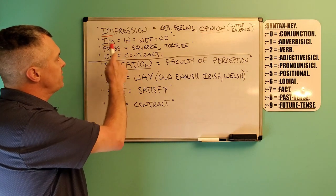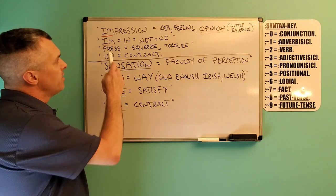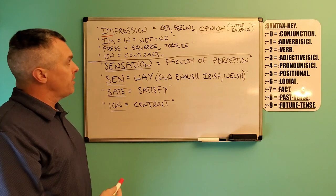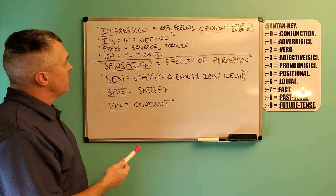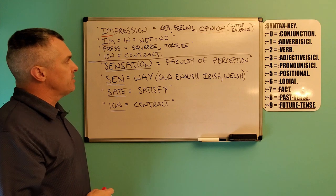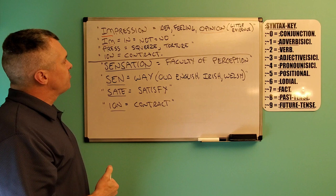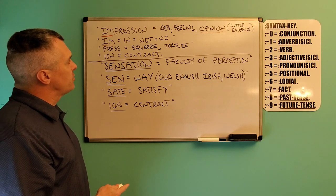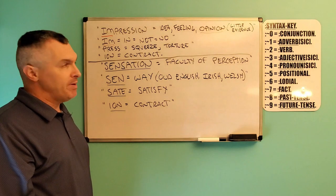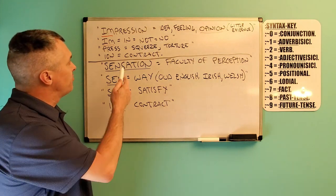First, we have 'impression.' We have a vowel in front of a consonant at the beginning of the word — it means no. Idea, feeling, opinion, little evidence — Google will give you that definition. Taking it apart: IM is a particle of negation, meaning in, not, no. Then the next part is PRESS, which means to squeeze and torture. And then ION means contract. So it's basically a no-squeezing, no-torture contract. That's impression.